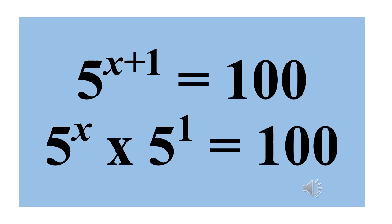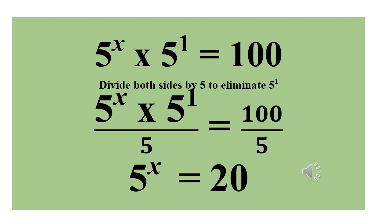So we are using 5 raised to power x times 5 raised to power 1, which now equals 100. It then follows that we can divide both sides by 5 — the same thing as 5 raised to power 1. So we divide through by 5: we have 5 raised to power x times 5 raised to power 1, all divided by 5, equals 100 divided by 5.